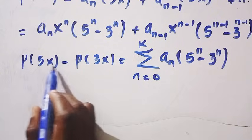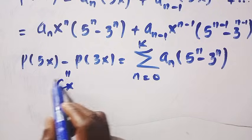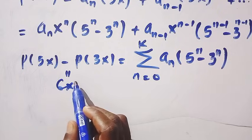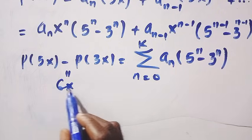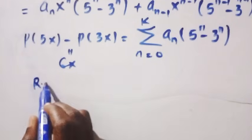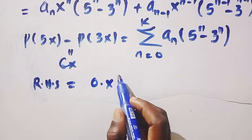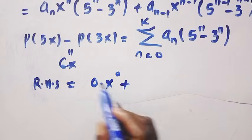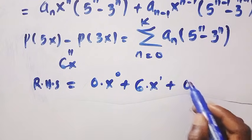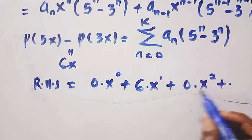But P(5x) minus P(3x) equals 6x. Since we have 6x on the right-hand side, the power is 1, which means all other degree coefficients must be zero. So on the right-hand side we have: 0 times x^0, plus 6 times x^1, plus 0 times x^2, plus 0 times x^3, and so on.